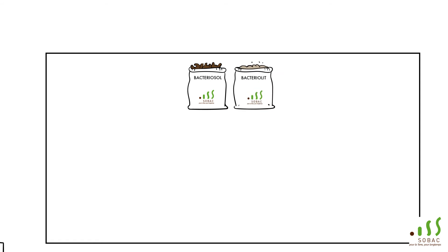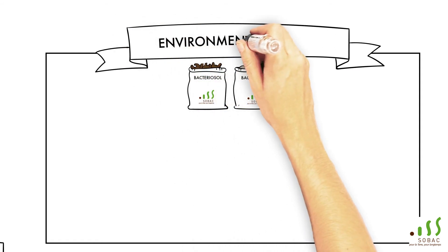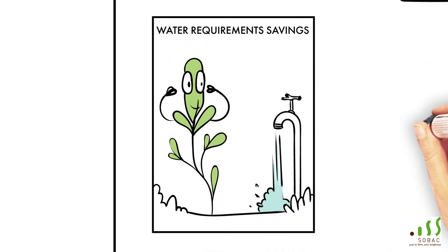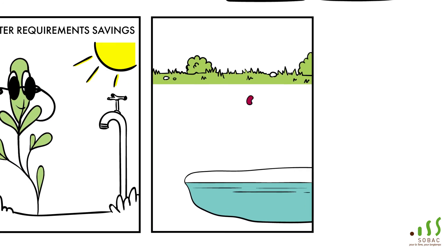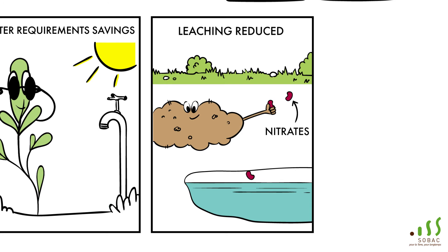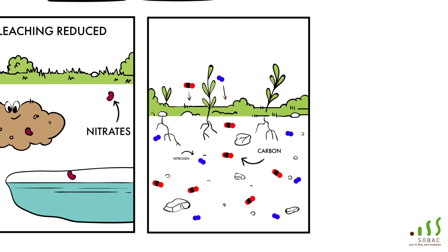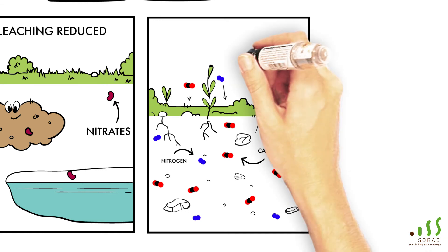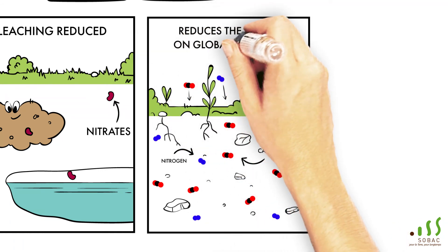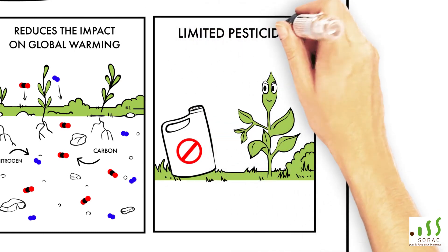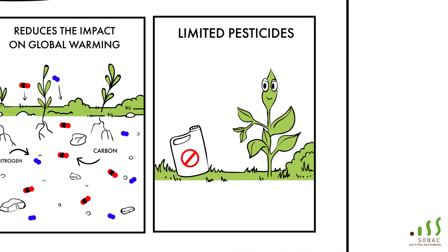Bacteriosol and Bacteriolite also have major environmental benefits. There is significant saving in water requirements, as plants are more drought-resistant. Leaching of contaminating elements such as nitrates is reduced. Storage of carbon and nitrogen in the soil is improved, which reduces the impact on global warming. The use of pesticides is limited, as the plants are more resistant to diseases.